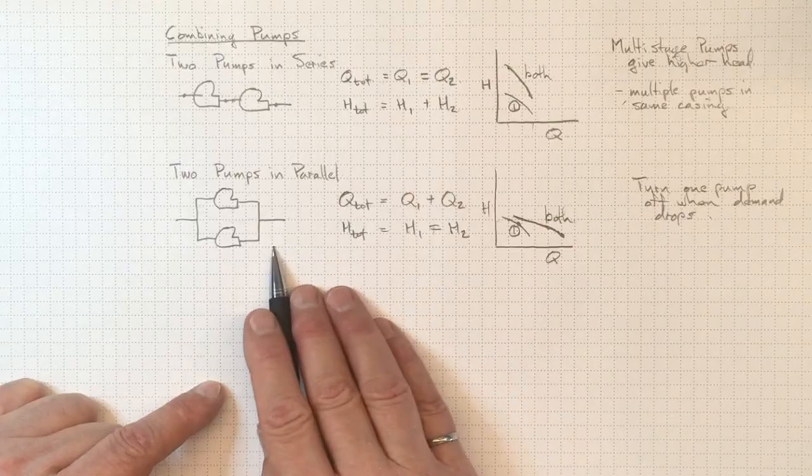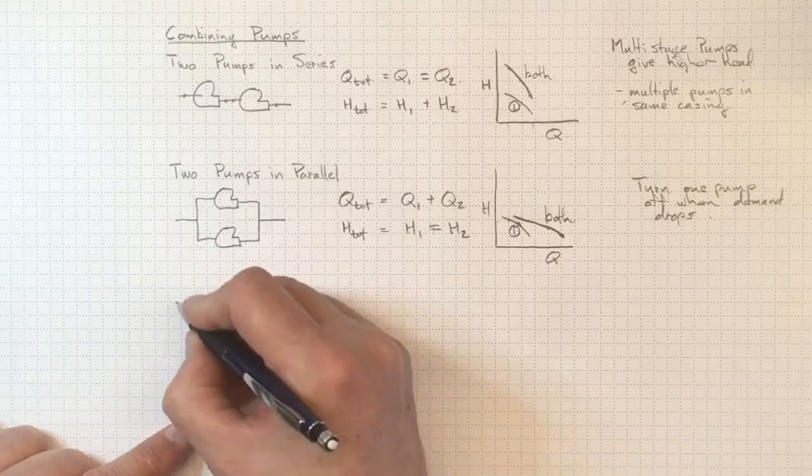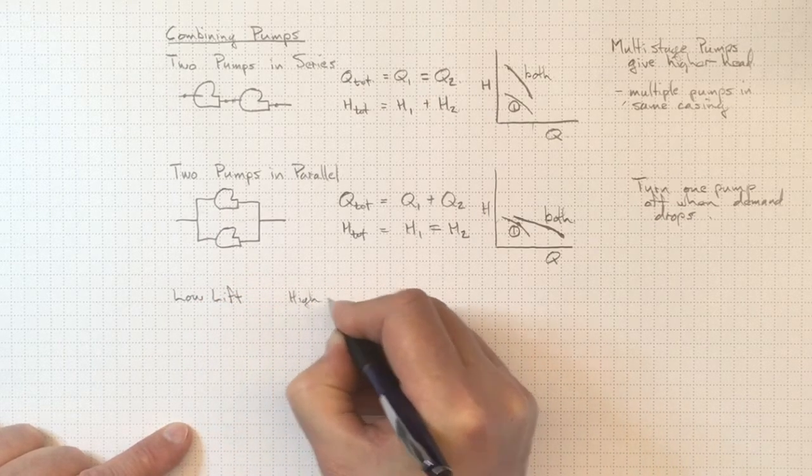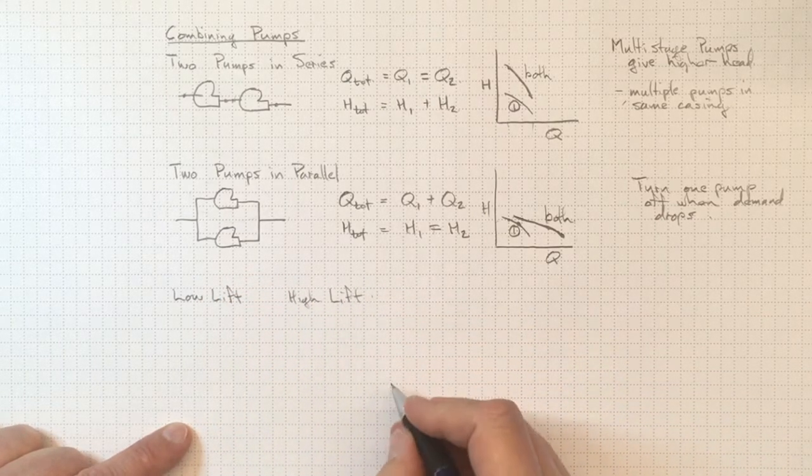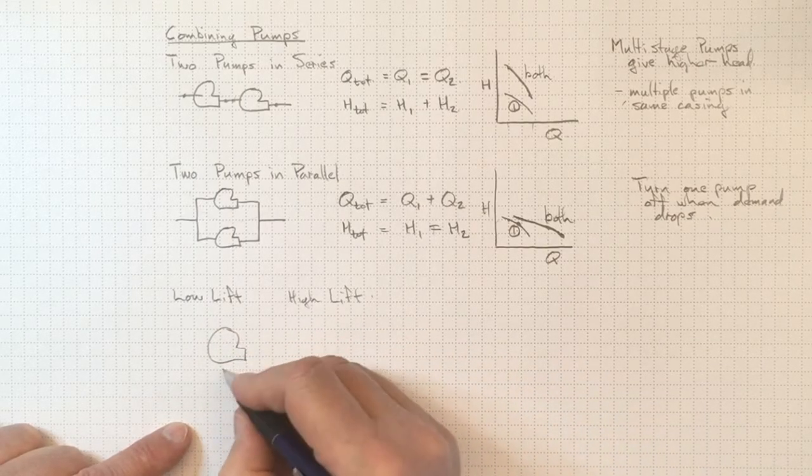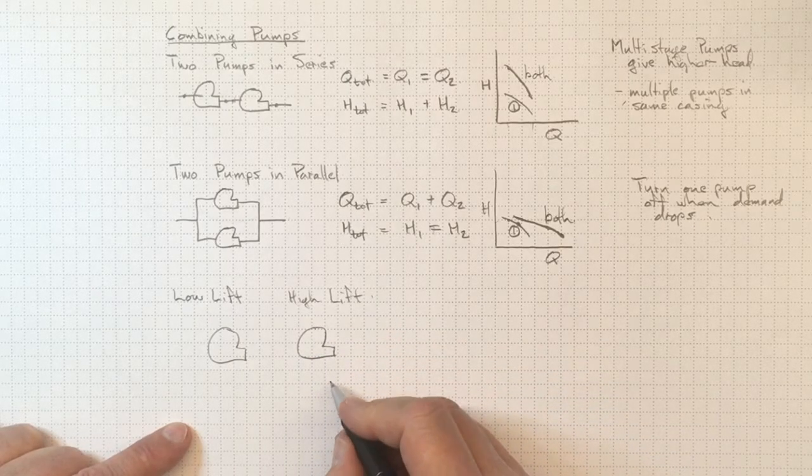Now, why would we be going with combinations like this? Well, we saw one example in the reality check video. That was where we had the combination of the low lift and high lift pumps. We had essentially two pumps in series, one low lift and one high lift with different flow characteristics.